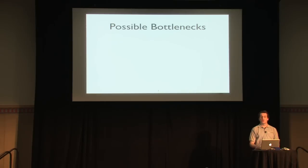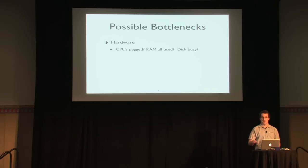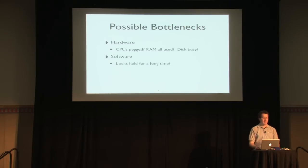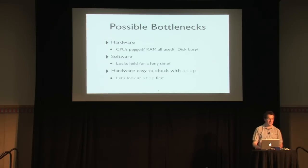All we know is that virtual machines are being created in parallel and the time is roughly linear in the number of virtual machines. We think there's a bottleneck — things are lining up to be created. One possible cause is hardware: if CPUs are pegged, or RAM or disk is tapped, we can't create more VMs in parallel. Another broad category is software bottlenecks, such as locks held for a long time introducing serialization across all VM creation.